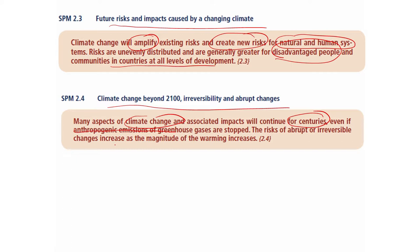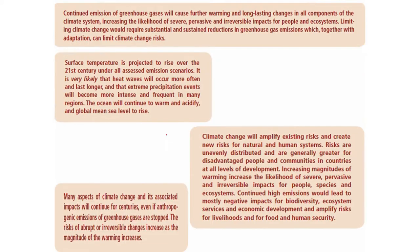Several systems have the potential for irreversible or no-analog states and abrupt shifts to catastrophic conditions: the Greenland ice sheet, Antarctic ice sheet, meridional overturning circulation, Amazon forests, and monsoons. Risks are unevenly distributed and are generally greater for disadvantaged people and communities in all countries at all levels of development — both across nations and within nations.